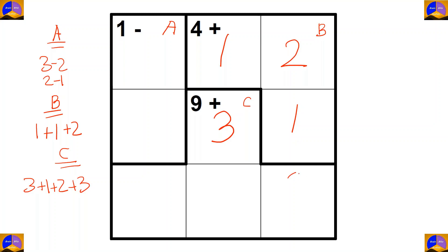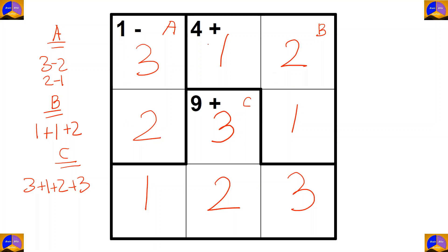For completing this column we write three here, and for completing this column it will be two. Completing this row will be one, this row two, and this row three. Let's recheck: three minus two is one, one plus two plus one is four, three plus one plus two plus three is nine. That is all about Math Doku. Was it interesting? For more useful videos please subscribe to our channel. See you soon, bye bye.